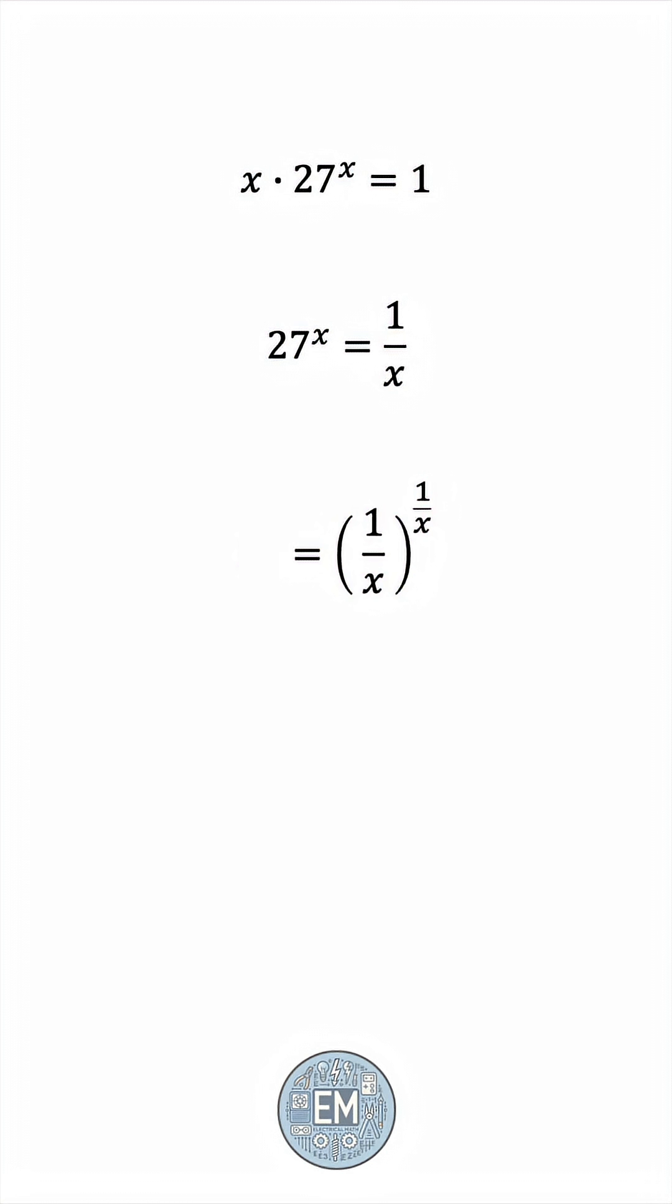27 is 3 to the power of 3, as we said, so 1 over x must be this 3, or x must be 1 third. And that's the answer.